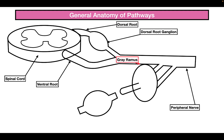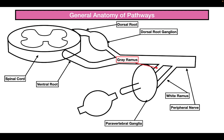From the peripheral nerve we also have other pathways: the gray ramus and the white ramus. The white ramus is myelinated whereas the gray ramus is not. These lead into the paravertebral ganglia, which is part of the paravertebral chain. We also see the prevertebral ganglia, which is part of the prevertebral chain. So this is the general diagram that we have here.